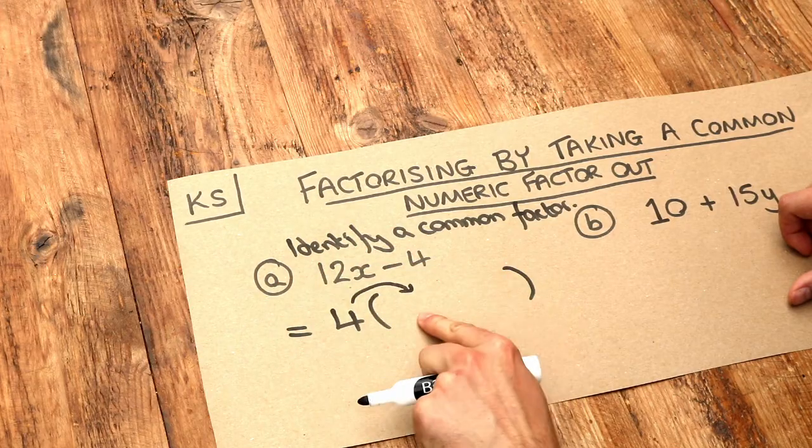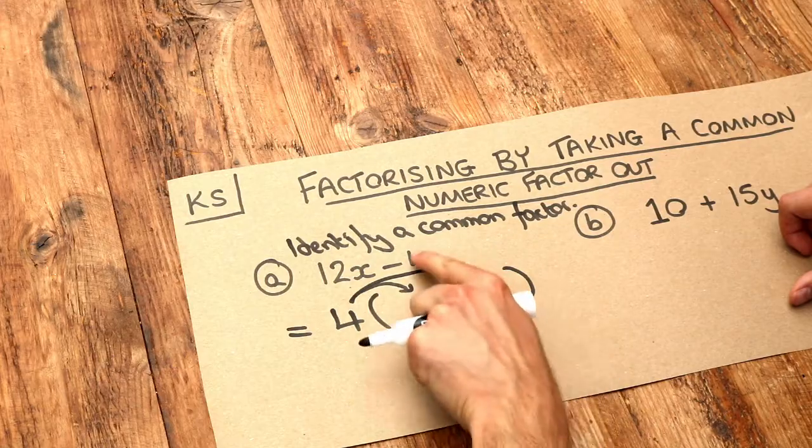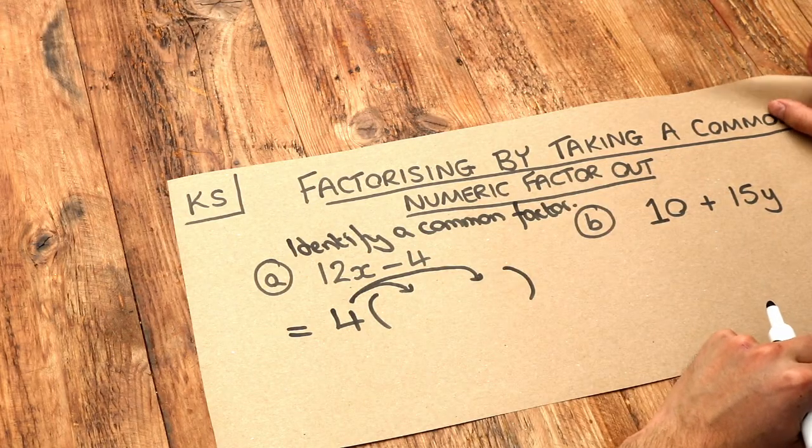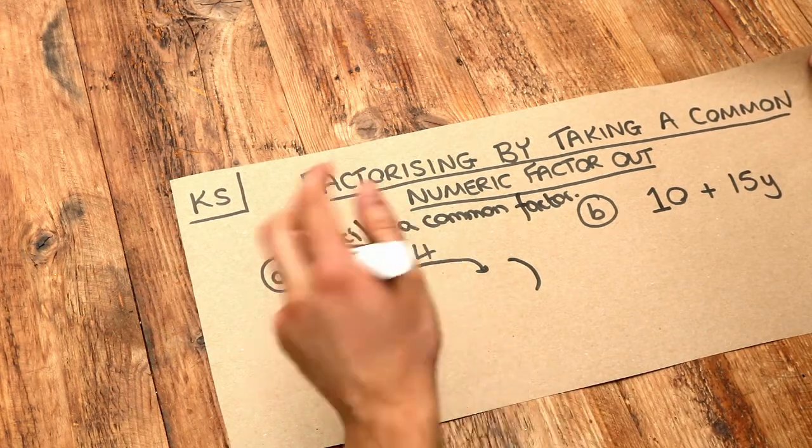So 4 times what would give you the 12x? And 4 times what would give you the minus 4? So we think we'd expand a bracket. Well, let's think about the number first. 4 times what gives you the 12x?